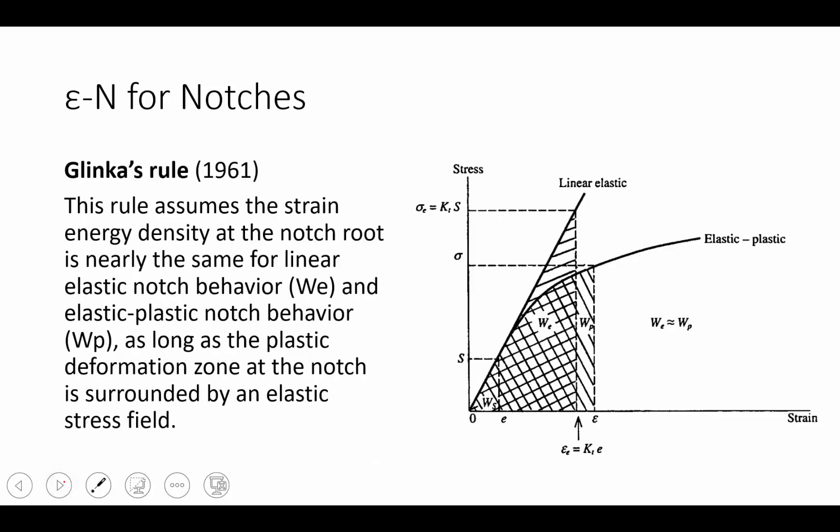The second approach that we can apply to deal with mean stress and the effect of notches was introduced by Glinka. Glinka's rule assumes that the strain energy density at the notch root is nearly the same for the linear elastic notch behavior and elastic-plastic notch behavior, as long as the plastic zone at the notch is surrounded by an elastic strain field. What that means is, as long as we have some elasticity in our ligament area, as long as we are not fully plastic across the ligament area of our component, we can make this assumption.